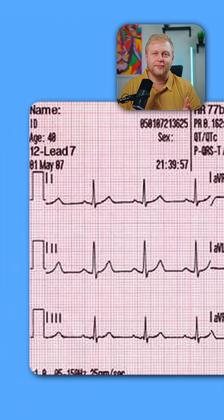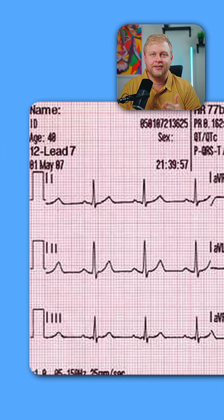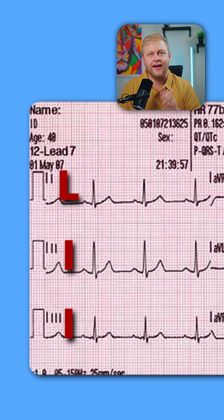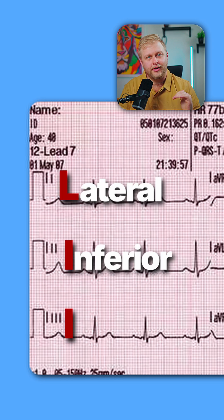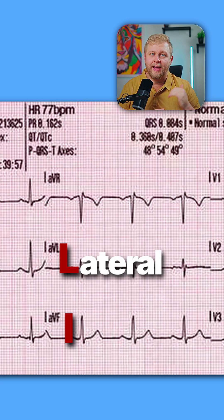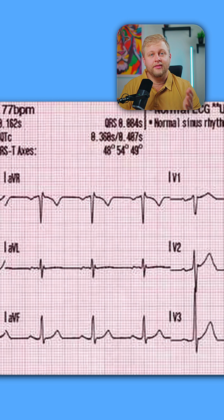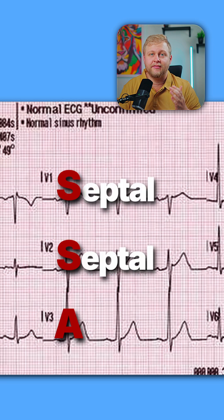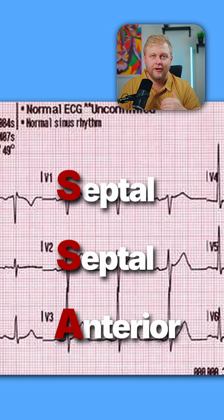So what does that mean? The first column of leads one, two, and three is going to be marked as L-I-I for lateral, inferior, inferior. In the second column, we skip AVR and mark it L-I — so AVL is lateral and AVF is inferior. The third column we mark as ass backwards, or S-S-A, which stands for septal, septal, anterior.